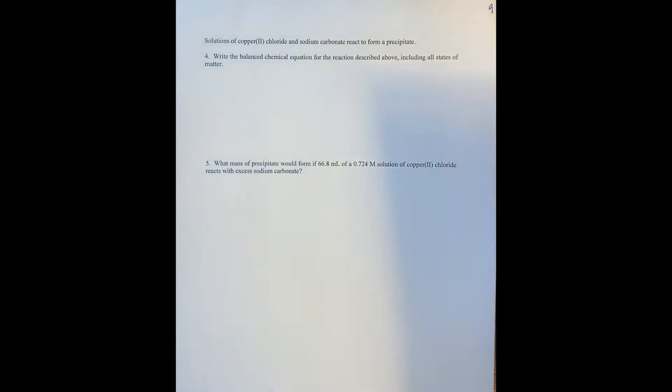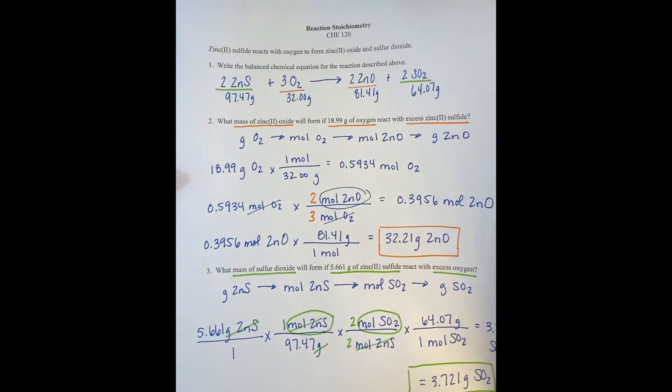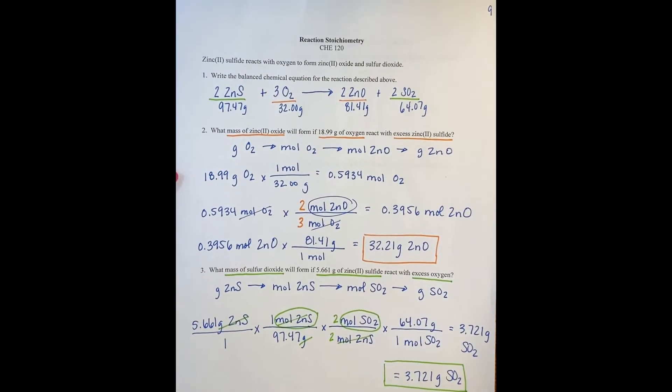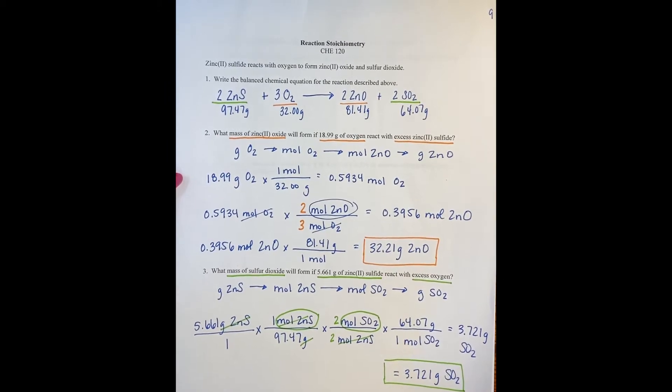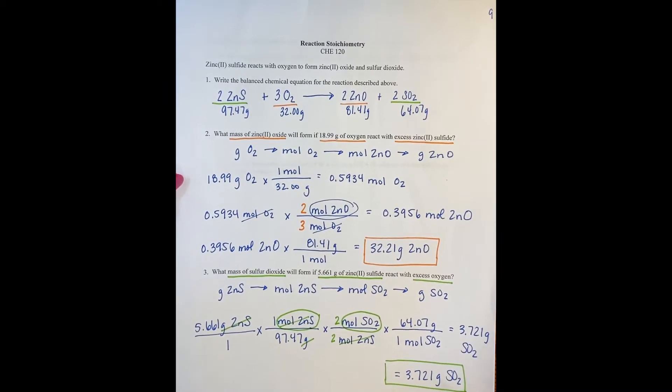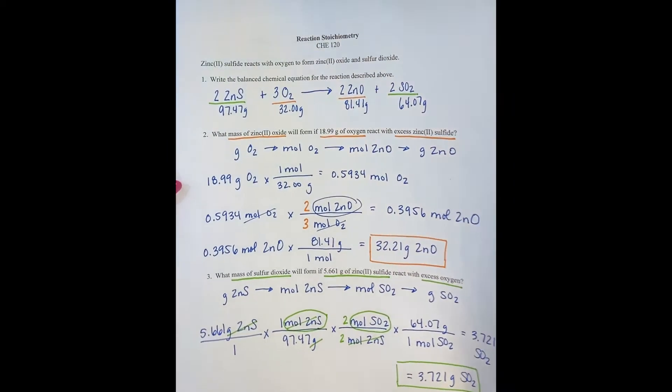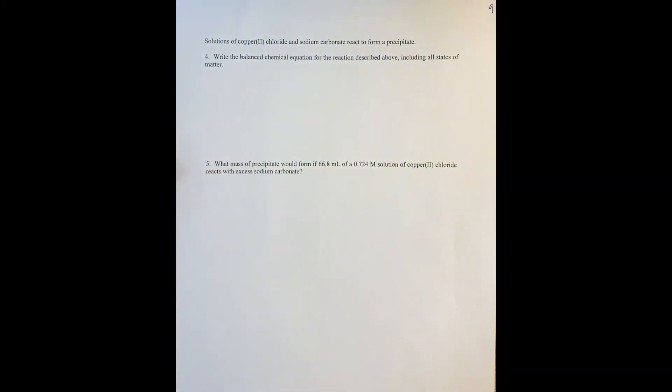Now we're going to look at the next page in your gold packet. The previous video looked at the reaction stoichiometry for a problem that started with zinc 2 sulfide. The next page in your packet looks at the following question.